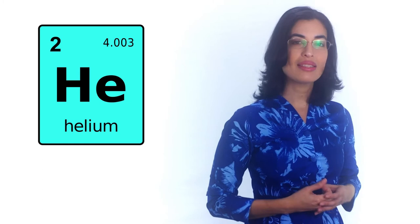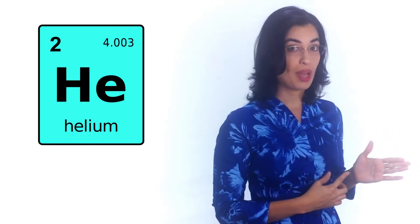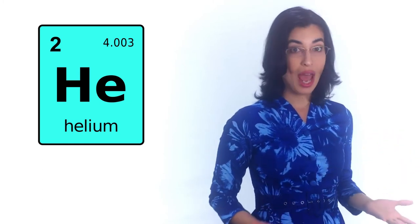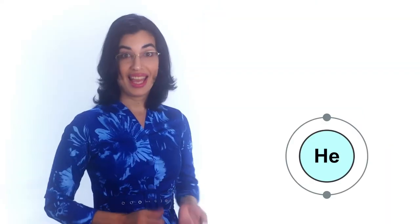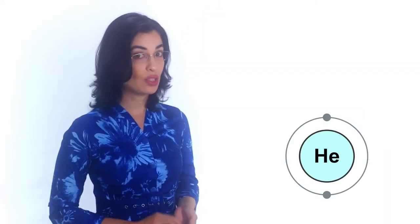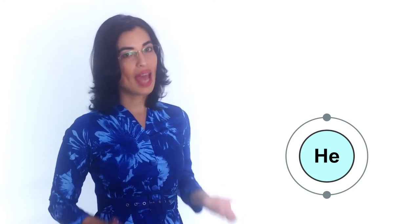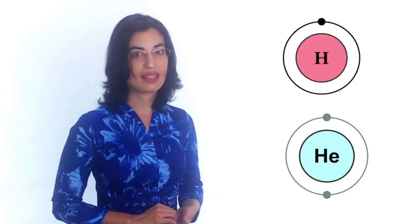The valence electrons are the outermost electron of an atom and they determine how the atoms react with other atoms. Helium has two valence electrons and it does not easily react with other atoms, unlike hydrogen with only one valence electron.